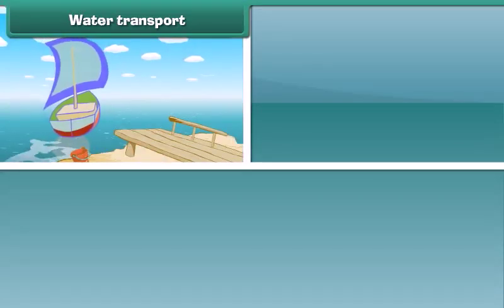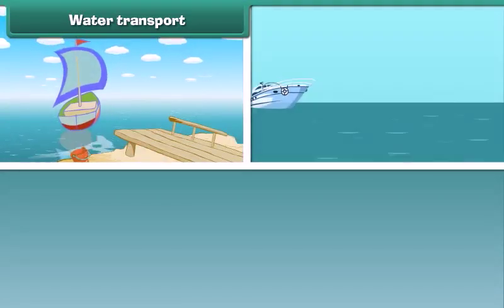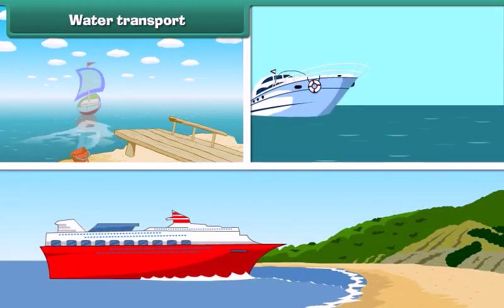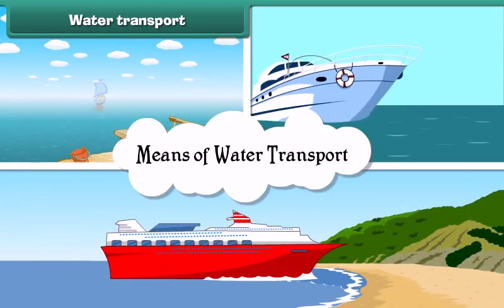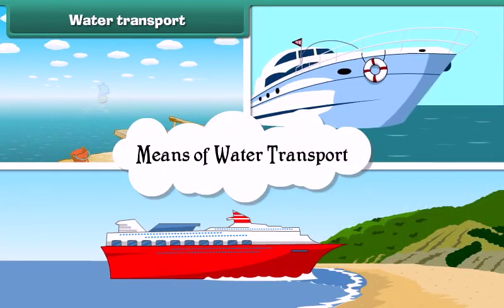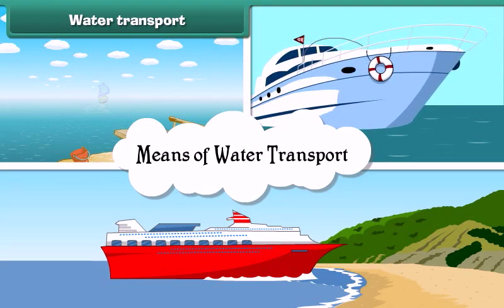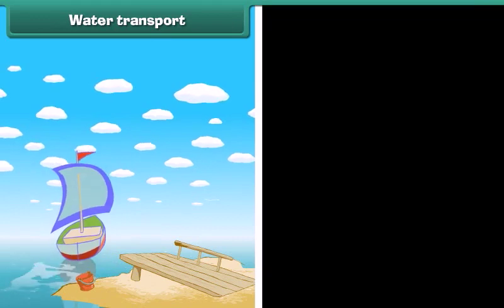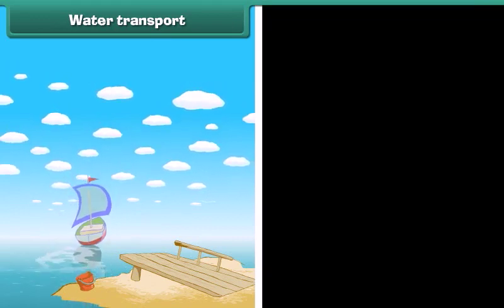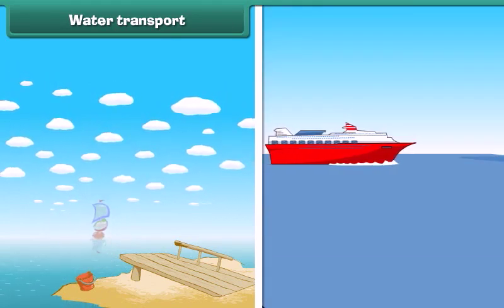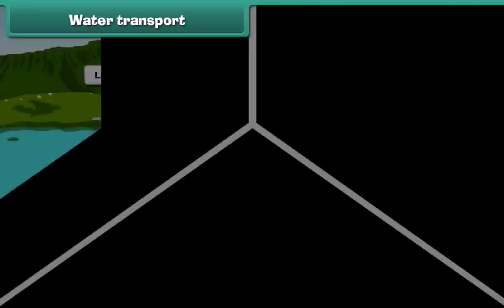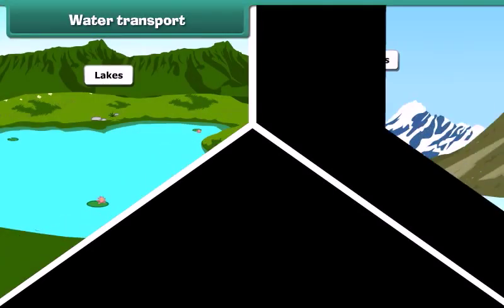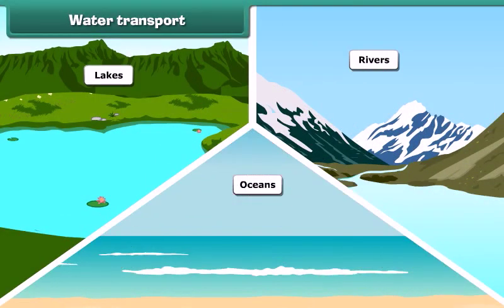You have seen boats, steamers and ships. These are the means of water transport. These vehicles run through waterways. Boats run in lakes and rivers while ships run in deep and large water bodies. Lakes, rivers and oceans are examples of waterways.